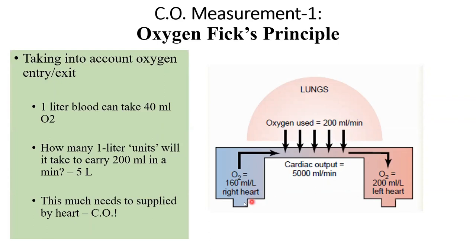So there you can readily see that there is a difference of 40 ml. That 40 ml is picked up by each liter of blood — it's 160 ml per liter coming in. So the change, the extra 40 ml, is being carried by each hypothetical unit of blood. Each liter of blood passing through will carry an extra 40 ml of oxygen.